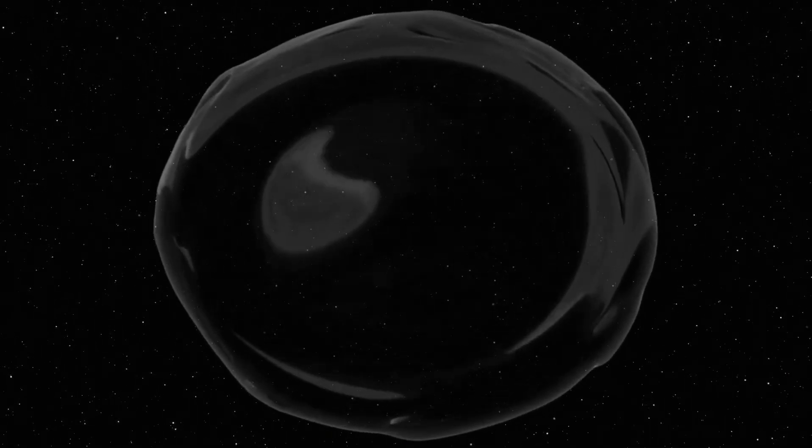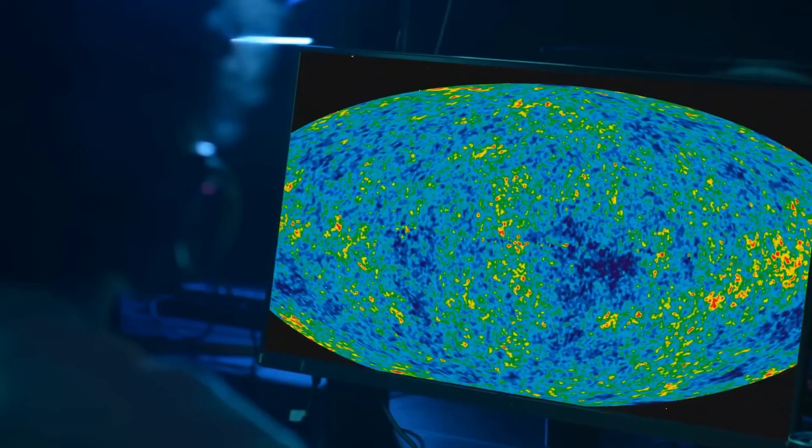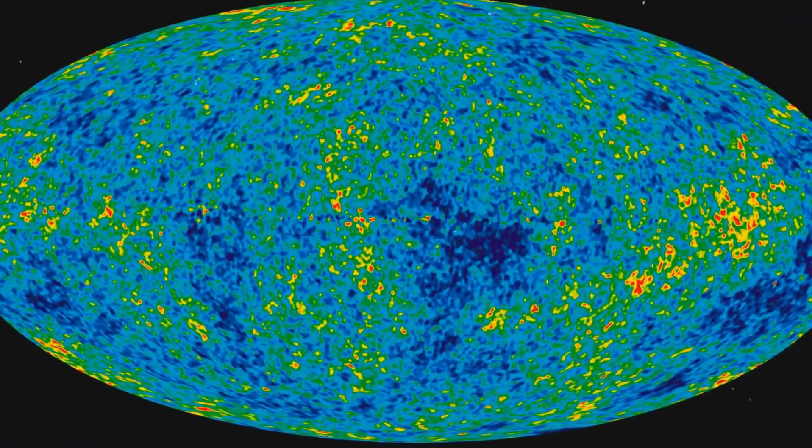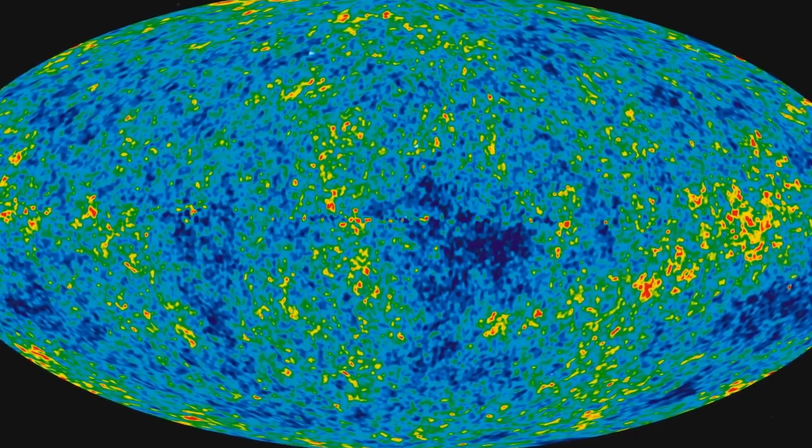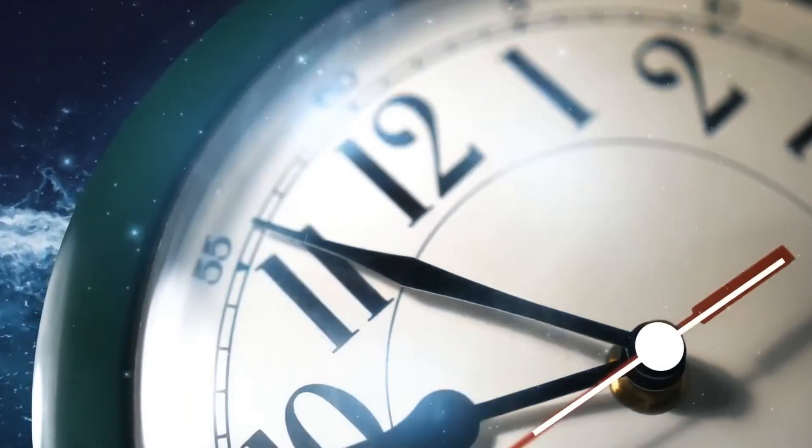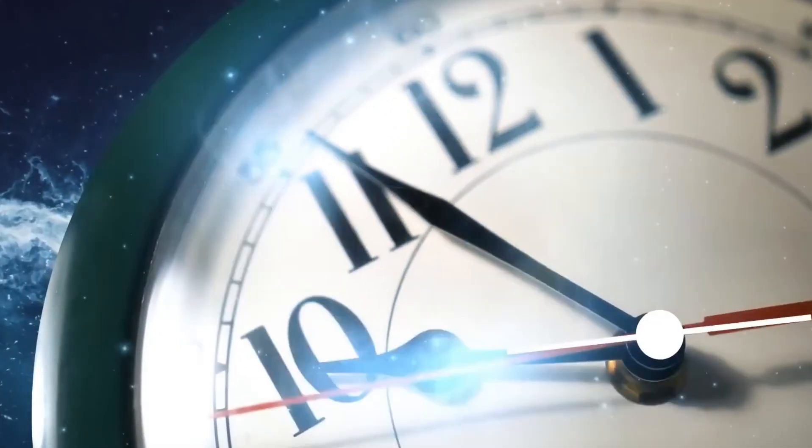These networks, often referred to as the cosmic web, consist of clusters of galaxies, threads connecting these clusters and vast empty spaces between them. The voids look like vast regions with a much smaller number of galaxies in stark contrast to the dense clusters and threads of the cosmic web.